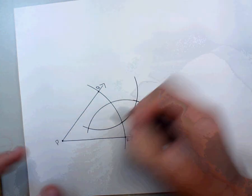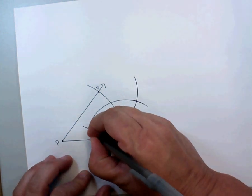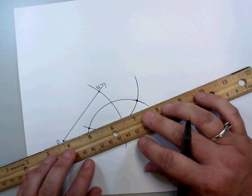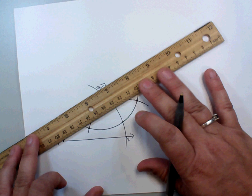Where those two intersect, here and here, we can take our straight edge and connect all of our dots.